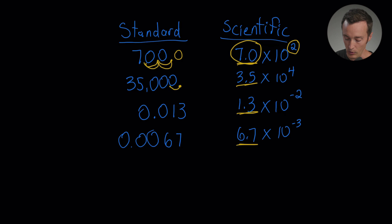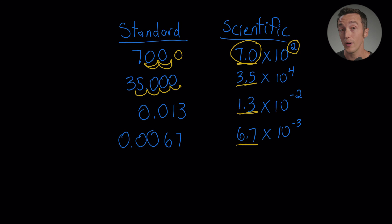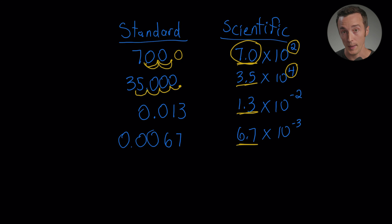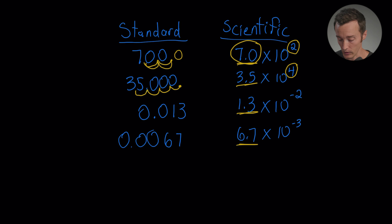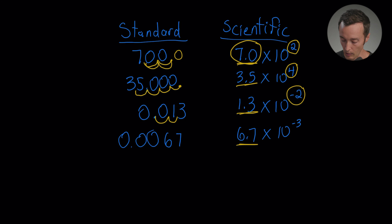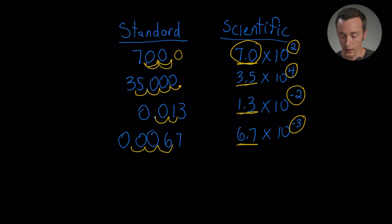Same thing with 35,000 — the decimal point is after the last zero, and moving it one place gives 3500, two gives 350, three gives 35 — none of those are between one and ten. But 3.5 is, so we stop there and count: we moved it four places, giving us 10 to the fourth. For small numbers it's the same idea but with negative exponents — 0.013 to 1.3 requires two places, giving negative two.